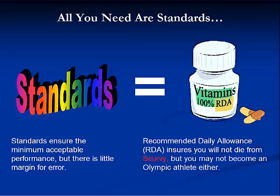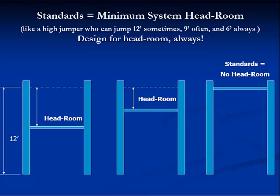Industry standards are the key to designing, installing, and certified testing of network cabling systems. You don't have to follow the standards like you do with national or local codes, but to achieve performance you had better follow them. Standards ensure only the minimum acceptable performance, with little margin for error. So you want to design for maximum headroom, like a high jumper who can clear the bar every time with lots of room to spare, so your network will not slow down or fail when stressed by demands from users or active electronics.